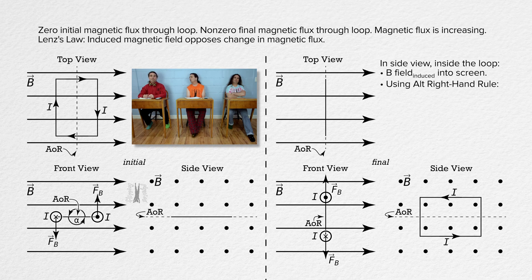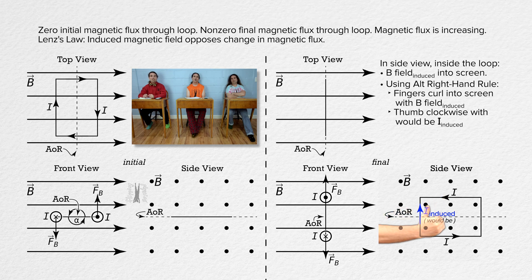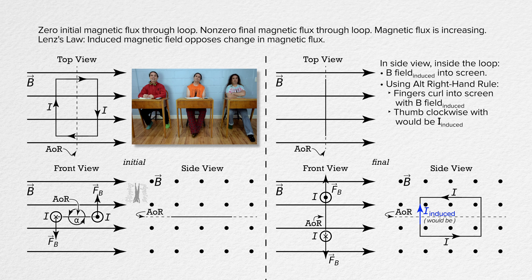Using the alternate right-hand rule, point fingers in the side view into the screen inside the wire loop in the direction of the induced magnetic field inside the wire loop. The thumb points in the clockwise direction in the side view, in the direction of the induced current in the rectangular current carrying wire loop. And that induced current in the wire loop, which is clockwise in the final position in the side view, is opposite the direction of the current we placed on the wire loop in the first place to make it rotate in the magnetic field.